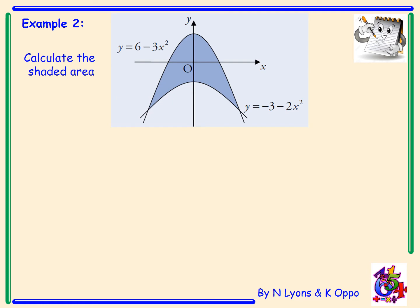Example two: calculate the shaded area. Now I've got two curves here. The top curve is y equals 6 minus 3x squared, and the bottom curve is y equals minus 3 minus 2x squared. But what are the limits then?